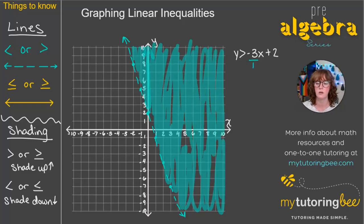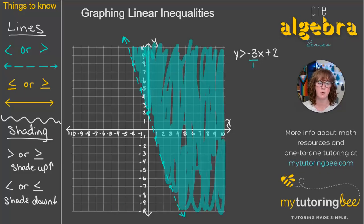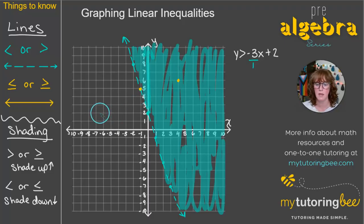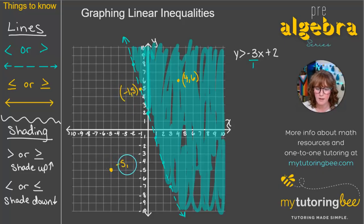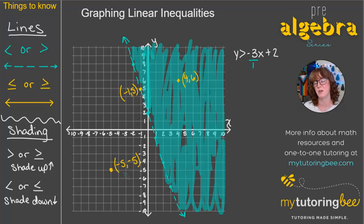When working on paper, just do a quick squiggly line to show which side you're shading. Now let's do some test points. I'm going to pick a point inside the shaded area, a point right on the line, and a point not in the shaded area. We picked (4, 6), negative 1, 5, and negative 5, negative 5. That point in the shaded area should be a solution.